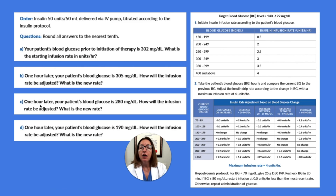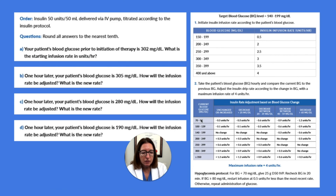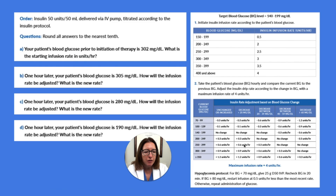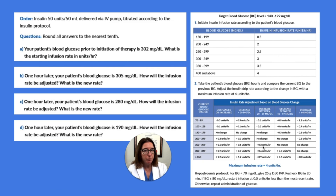Part C: one hour later, our patient's blood glucose is now 280. How will the infusion rate be adjusted? Our blood glucose came down 25. Our current blood glucose of 280 falls within its range on the protocol. Since our decrease was between 20 and 39 mg/dL, we use that column. We take our previous rate of 3.9 units per hour and add 0.3 units per hour, giving a new rate of 4.2 units per hour.